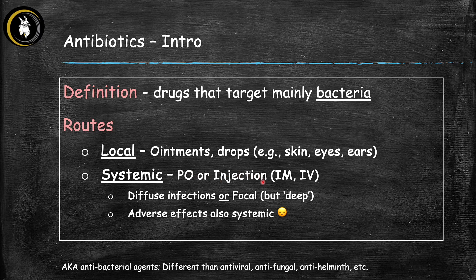The benefit of systemic administration is that it's helpful for diffuse infections or even focal infections in deeper areas. For example, cellulitis is a skin infection involving the deeper dermis — you can't reach it with topical antibiotics, so you have to give systemic antibiotics. The problem is that adverse effects of these drugs can also become systemic, so we're always weighing the risks and benefits depending on the type of infection.